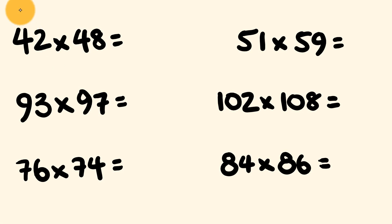We have 4s here. So we have 4 times 5, which equals 20, and 2 times 8, which equals 16. We have our answer, 2016. Next, we have 93 times 97. So we have 9 times 1 more than 9, which is 10. That equals 90. And then 3 times 7 equals 21.